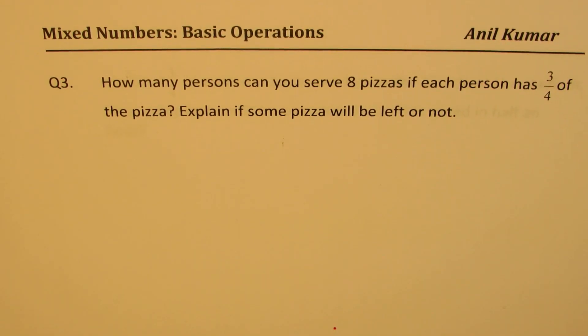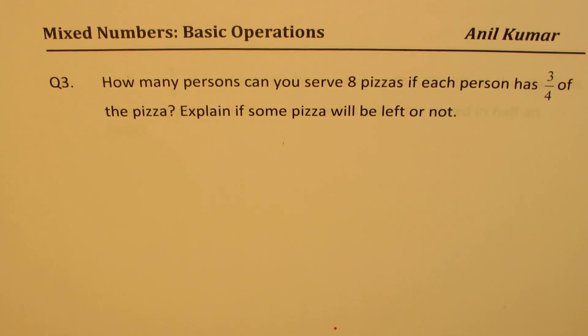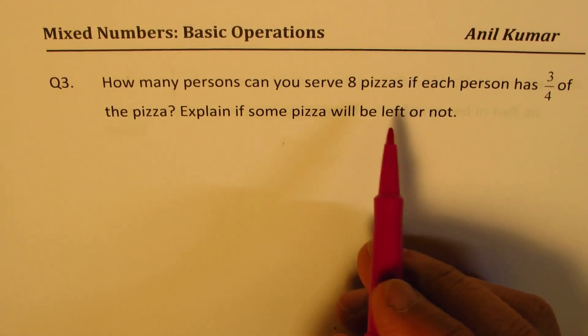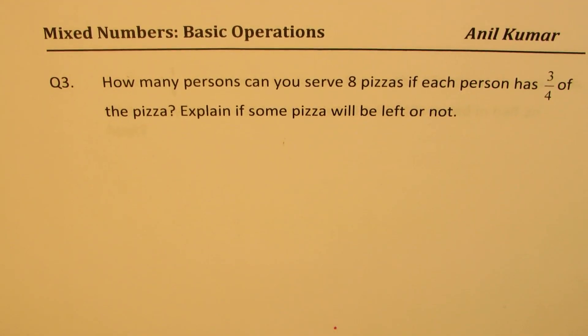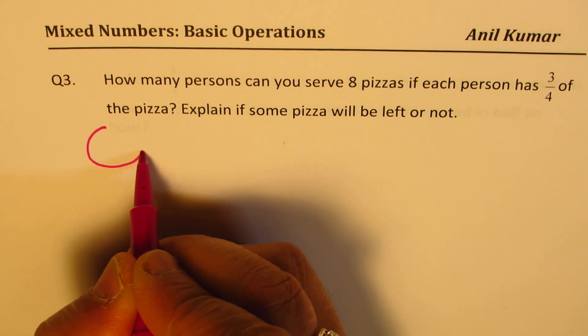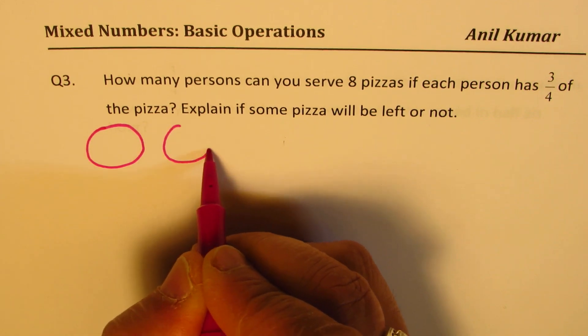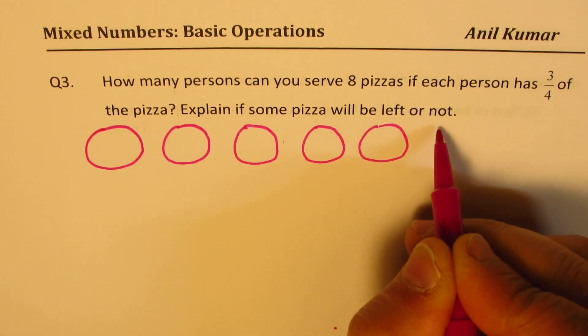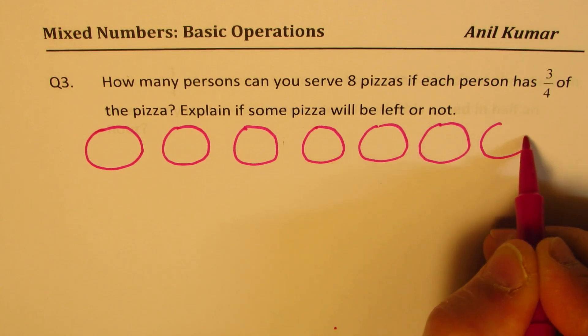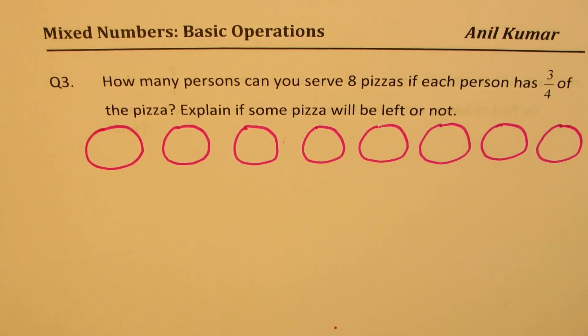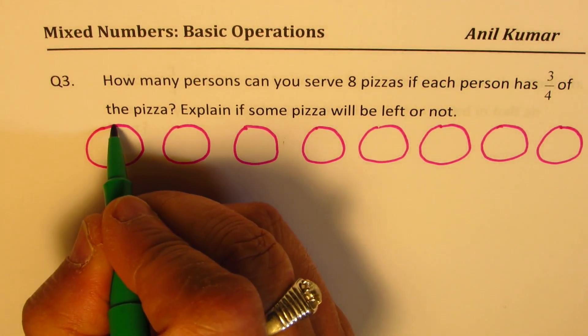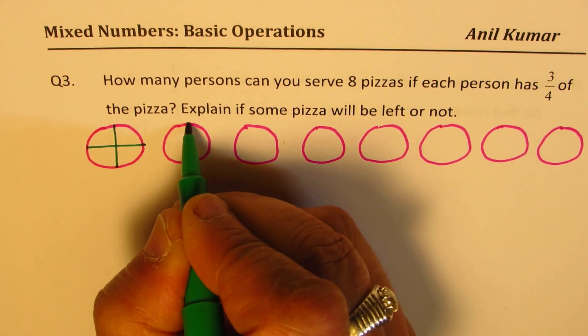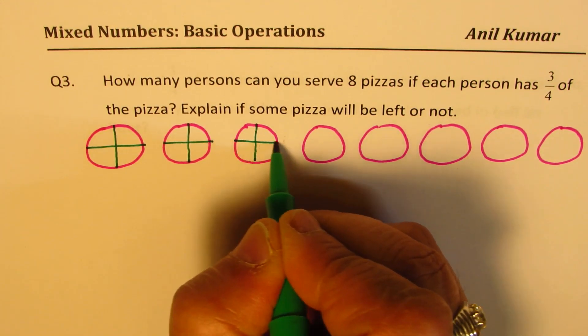Now, let's move on and see how do we multiply and divide by mixed numbers. So the question here is, how many persons can you serve 8 pizzas if each person has 3/4 of the pizza? Explain if some pizza will be left or not. Okay, that's very interesting. So we could actually find the answer by dividing. But let me illustrate this with the help of a small diagram.